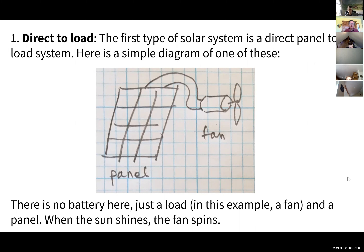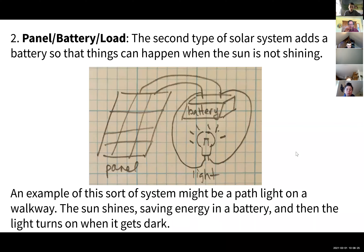The first type is a direct-to-load system, where you have a solar panel connected directly to a load — in this case, a fan. There's no battery, just a load and a panel. When the sun shines on the panel, the fan spins. This could be an attic fan, for example. You could also have a water pump running to move water into a tank, but it only works when the sun is shining — a fairly simple system.